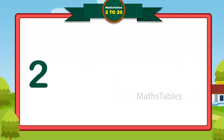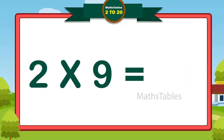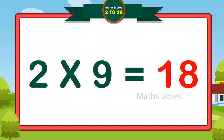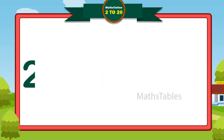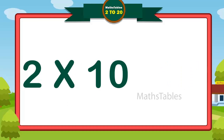Two nines are eighteen. Two nines are eighteen. Two tens are twenty.